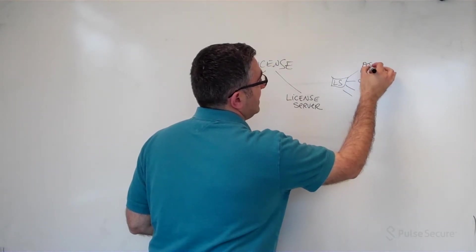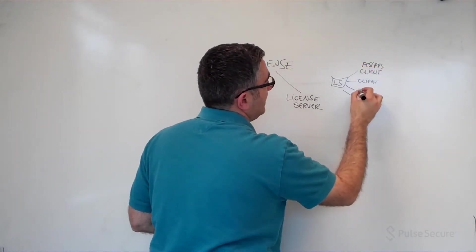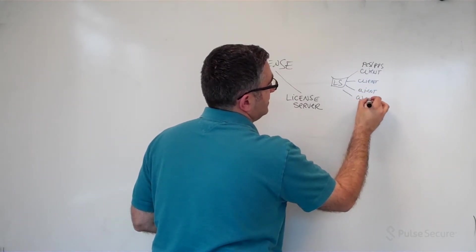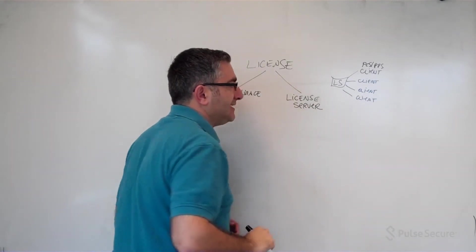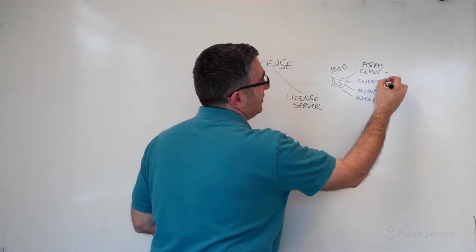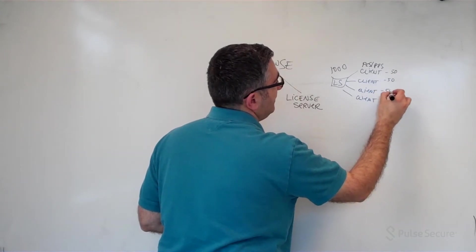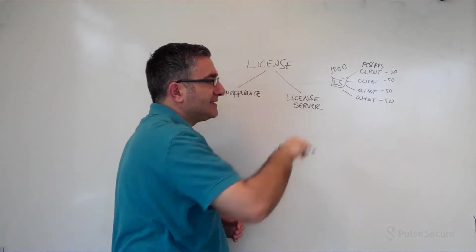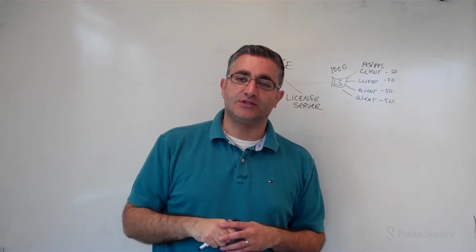So PCS and PPS, and I would be licensing these boxes as needed. I can put a thousand here, start each one off with let's say 50, 50, 50, 50. And as needed, they would be pulling licenses so they can service the connections that are happening.